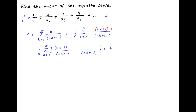This is equal to half of the summation of 1 upon (2k)! minus half of the summation of 1 upon (2k + 1)!, where k goes from 0 to infinity.